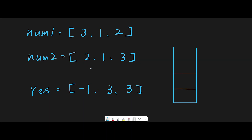Since nums1 is a subset of nums2, we only need to iterate through nums2. First we find 2 — the stack is empty, so just push 2. Move next and find 1. Check the stack: top is 2. Current number 1 is not greater than 2, so just push 1 onto the stack. Stack now has [2, 1].